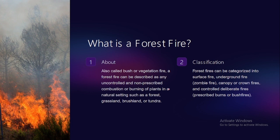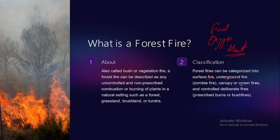Forest fires can occur in forests, grasslands, and bushland. The fire triangle requires fuel, oxygen, and a heat source — the sun and dry conditions provide that heat source in India. There are three types of forest fire: surface fire, underground fire, and canopy fire.